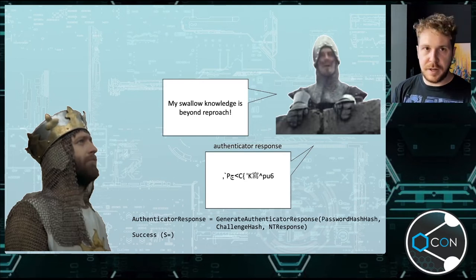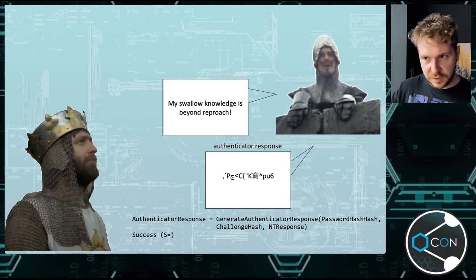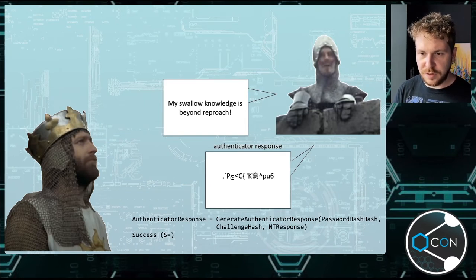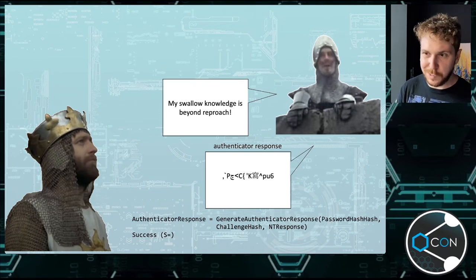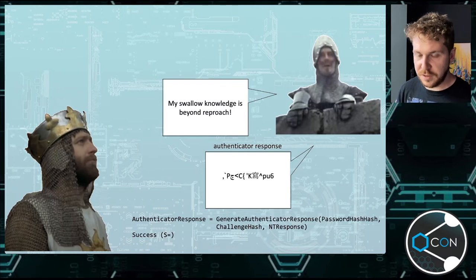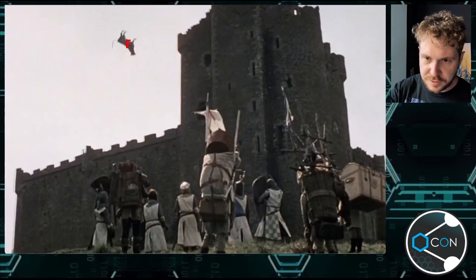MSChap is a mutual authentication challenge-response, whereby not only is Arthur authenticating to the Frenchman, but the Frenchman is also authenticating to Arthur. So the Frenchman, now that he has all this information, generates his own response - essentially all the same info, all the information transferred so far, as well as some bit of the password - which he will then send back to Arthur after having prepended an 'S=' for success. However, if he fails, Arthur gets sent a big fat F and gets told to bugger off.